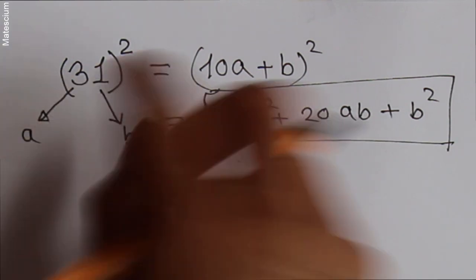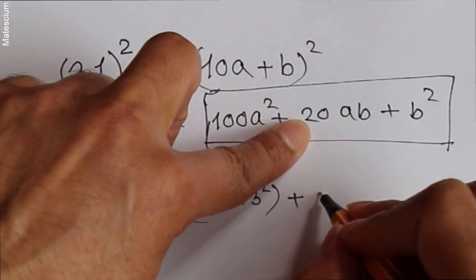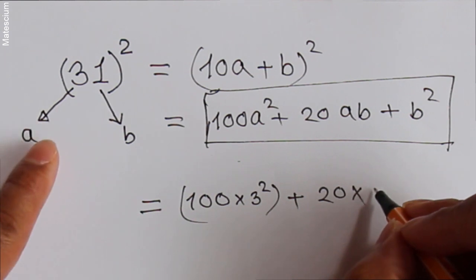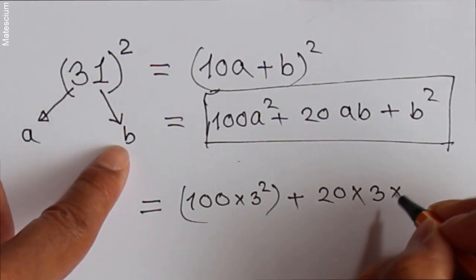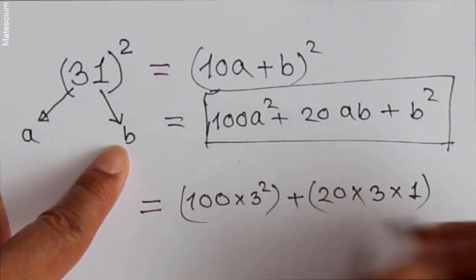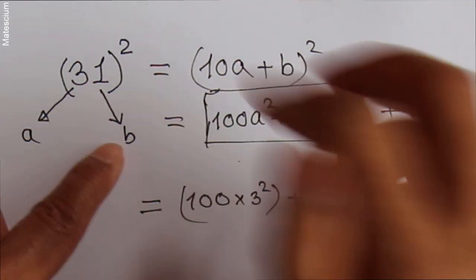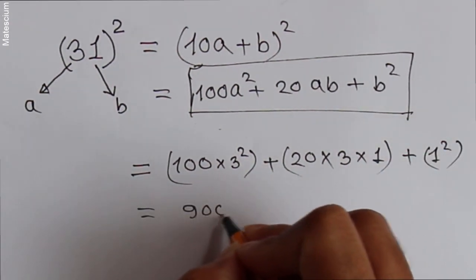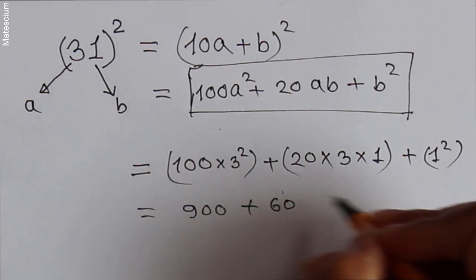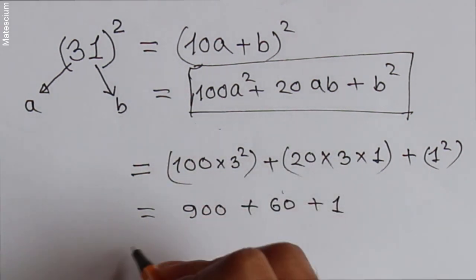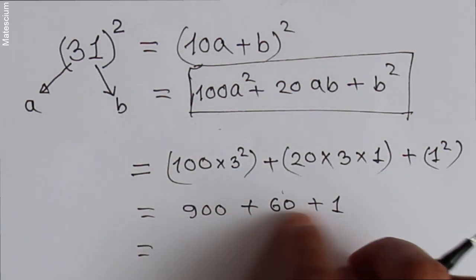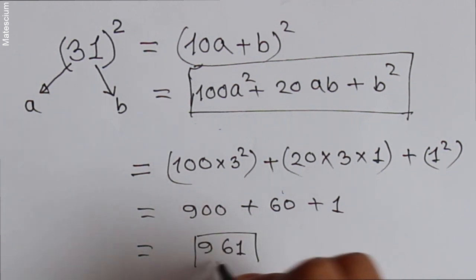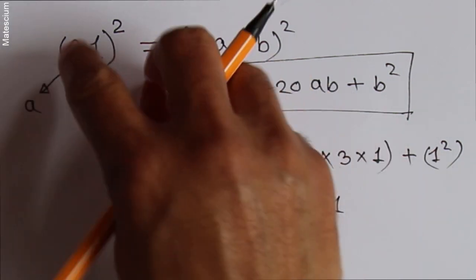For 31², 100A means A is 3, so 3 squared. Then 20 times A (which is 3) times B (which is 1), keep a bracket. And B squared means 1 squared. That gives us 900 plus 60 plus 1, which equals 961. Yes, this is the answer of 31 squared.